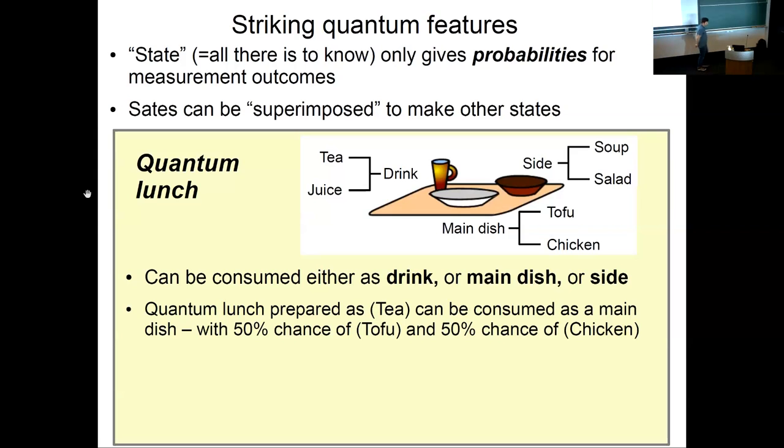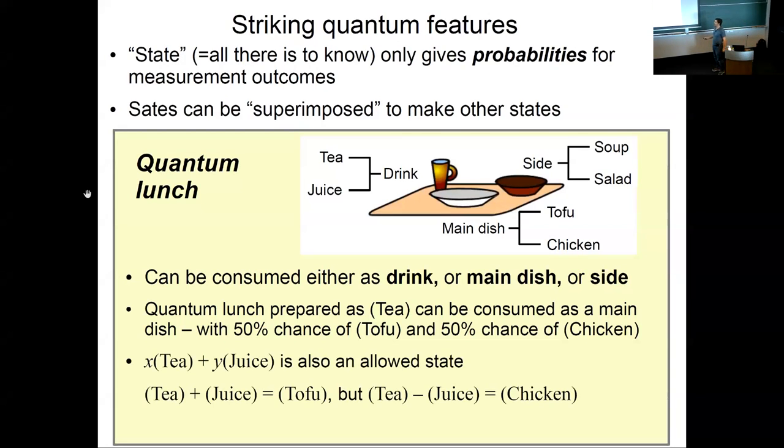So supposing you want to eat tofu. You go to the machine, and you just want to make sure that your quantum lunch is prepared in a definite state of main dish, and that that state is tofu. You go there, and you get confused because you notice that the machine only allows you to pick tea or juice as states. This is terribly confusing, but fortunately, there is a physicist behind you in line, and he says you can combine tea and juice states to get other states. If you want tofu, you just order tea plus juice. If you want chicken, you order tea minus juice.